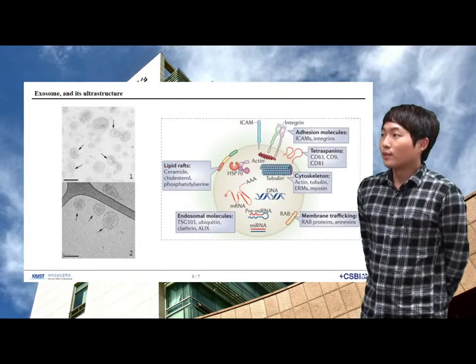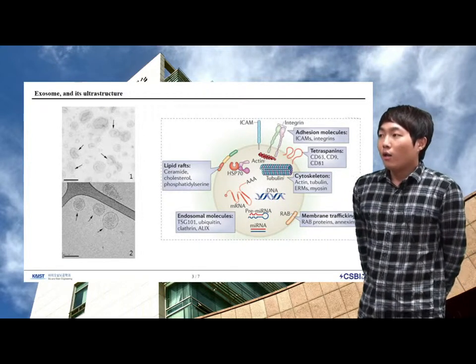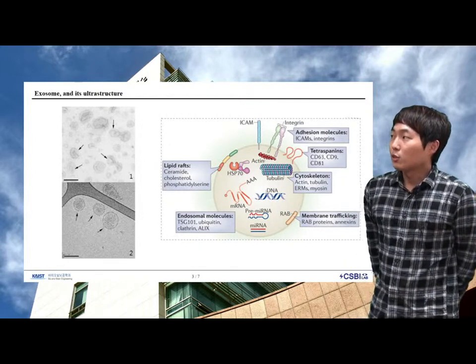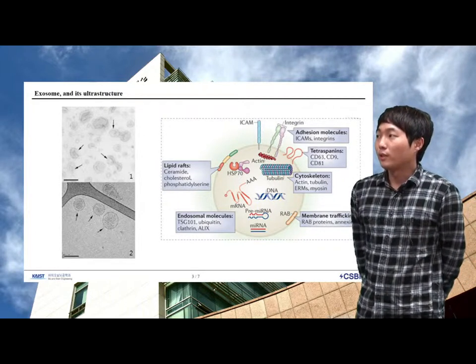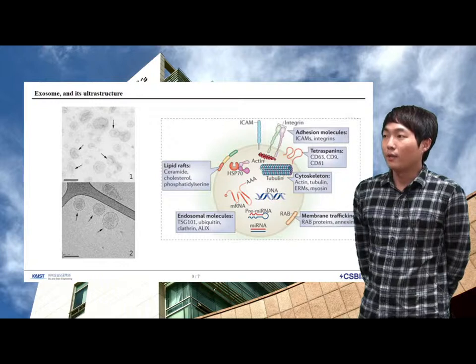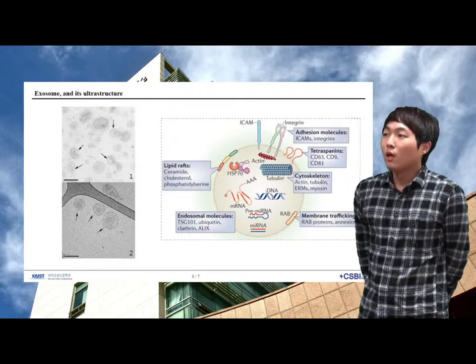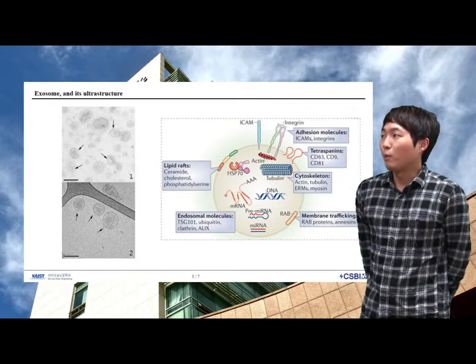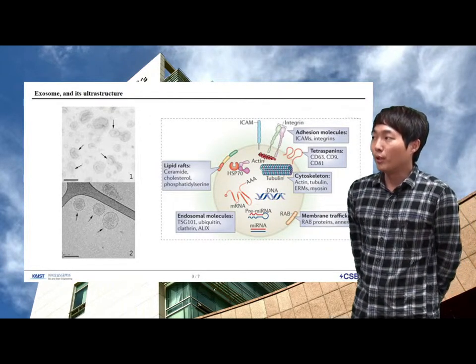One of the extracellular vesicles, exosome, has an elaborate structure. The first figure shows that exosomes isolated from melanoma cells were contrasted with uranyl acetate and embedded as a whole-mount preparation in methylcellulose. They have an artificial cup-shape appearance and heterogeneous size ranging from 30 to 100 nm.